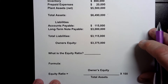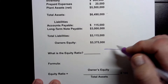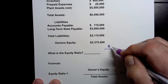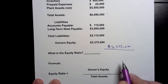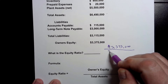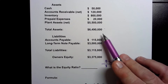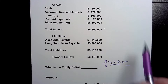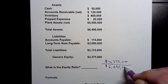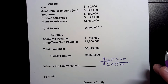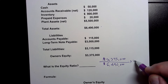So the first thing we need to do is find out what the owner's equity is, and we have that right here — that is $3,375,000. And we're going to divide it by the total assets. If we look up here on our balance sheet, we have total assets of $6,490,000. Let's do that division and then we'll multiply it by 100.